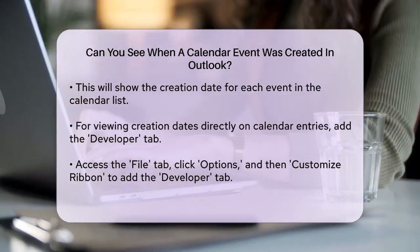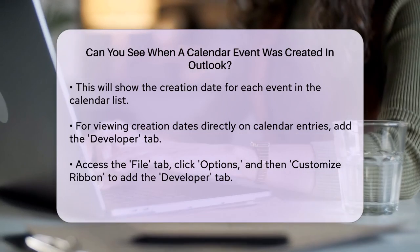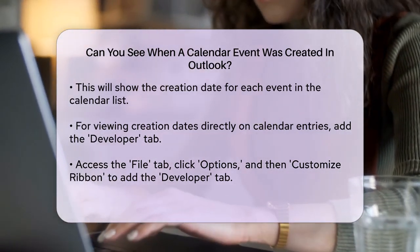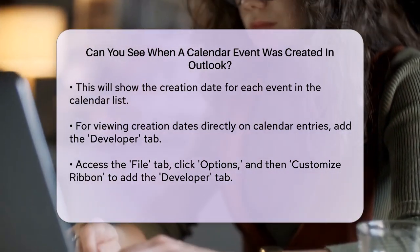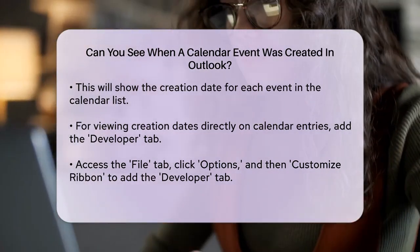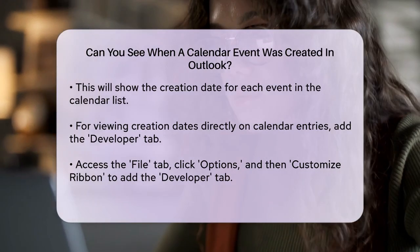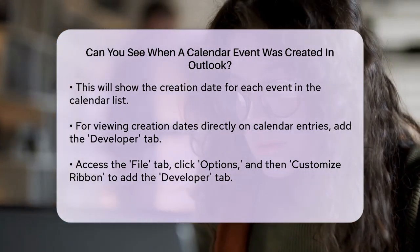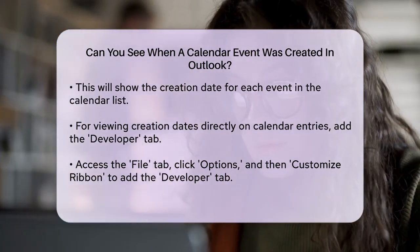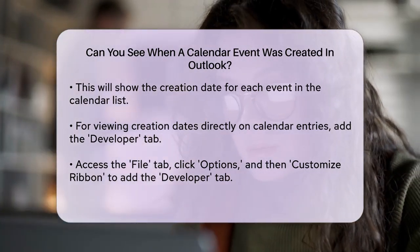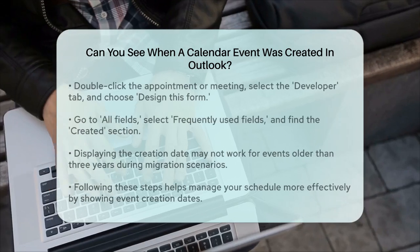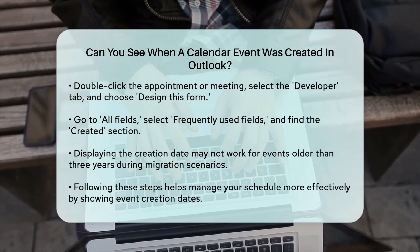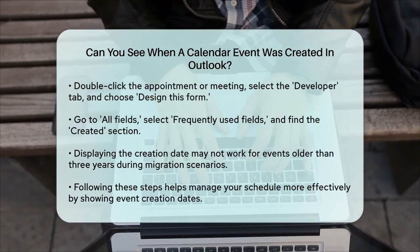Once you have the Developer tab, double-click the appointment or meeting in question, click on the Developer tab, and select Design This Form. Then go to All Fields, select Frequently Used Fields, and find the Created section. This will display the creation date of the calendar entry.